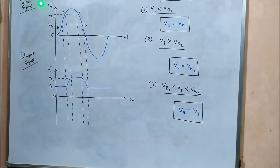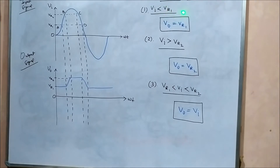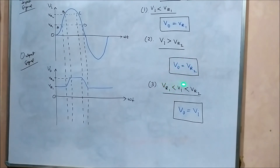Now we will plot the input and output waveform relationship of bias clipper configuration three. The three conclusions are: when Vi is lesser than Vr1, output equals Vr1; when Vi is greater than Vr2, output equals Vr2; and when Vi lies between Vr1 and Vr2, output equals input.